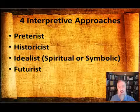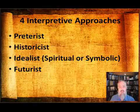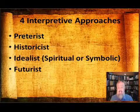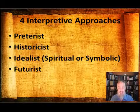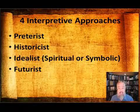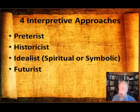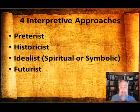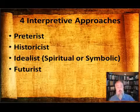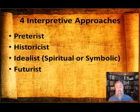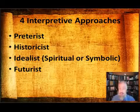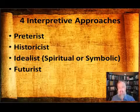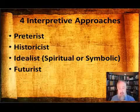Then there is the Historicist view. The Historicist believes that the book of Revelation corresponds to the entirety of the church age — that when you go through the different episodes, you should be able to look at each episode and say this corresponds to a particular event in church history. There are some tremendous charts that kind of spell out exactly where the different events fit in.